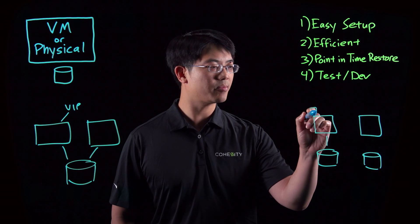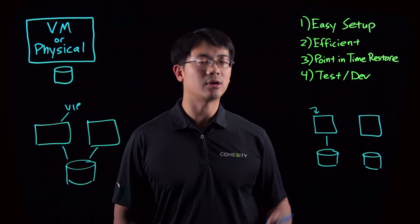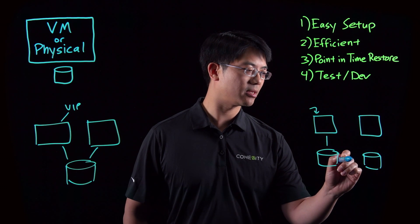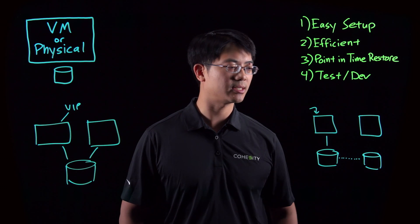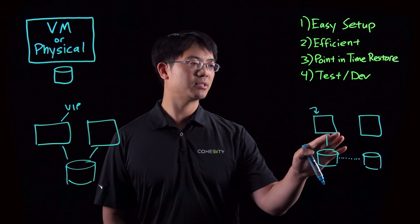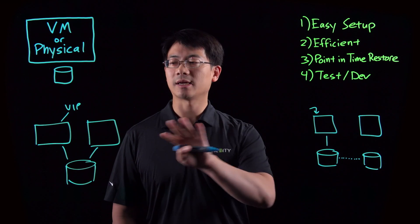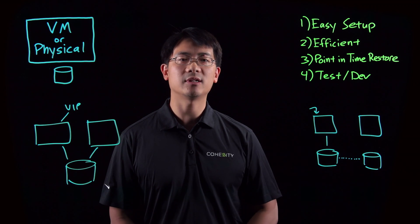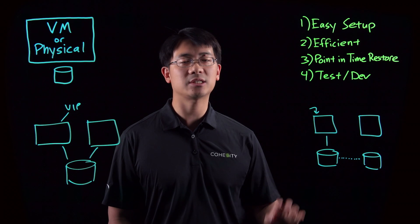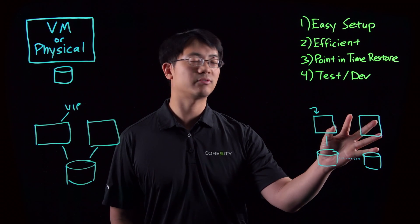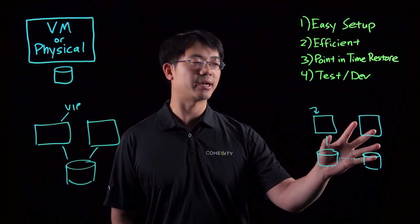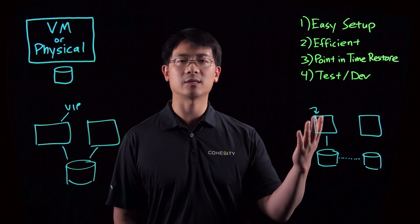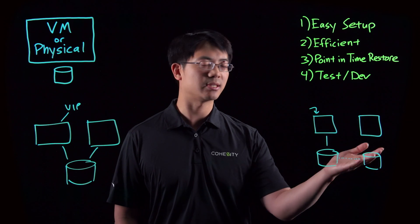Now, if a write comes into the primary, the always-on availability group will take care of replicating the data to the secondary sites. One difference with always-on and clustering is that each of these instances is available, so you actually have a choice at backup time which server you want to back up. Based on your production requirements, you might want to back up either the primary or the secondary.